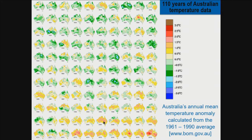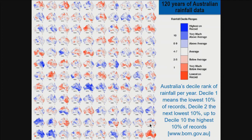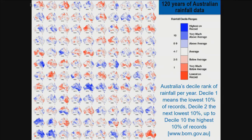Some years it's warmer than average and some years it's cooler than average compared to the 1961–1990 baseline period. But it's quite clear, especially from the 1990s onwards, that it has certainly got warmer, and that warming seems to have increased through time, especially in the last five or six years. When we look at rainfall data, this is another set of graphs available from the Bureau of Meteorology.